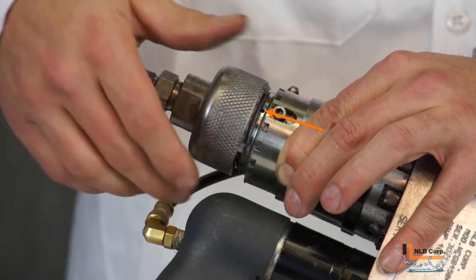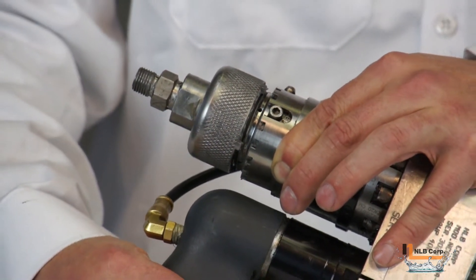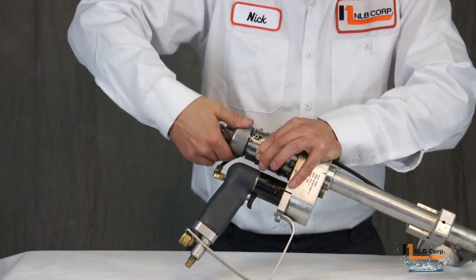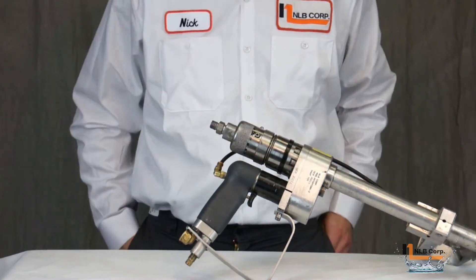The operator may see this water or they may feel it on their hand. The water will exit the hand lance via one of the four weep holes. Another way the operator may know the seal will need to be replaced is that the pump will not be able to reach its desired operating pressure.